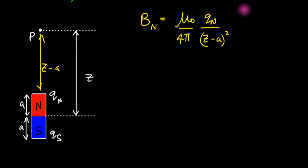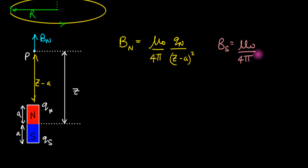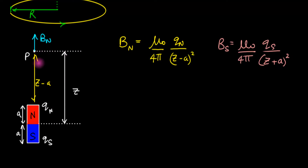Similarly, the south magnetic charge creates its own field B_S. That has a similar formula: mu-naught over 4-pi times q_S divided by (z plus a) squared — where z plus a is the distance from P to q_S. This field points in the opposite direction, just like a negative charge, so it acts downward.